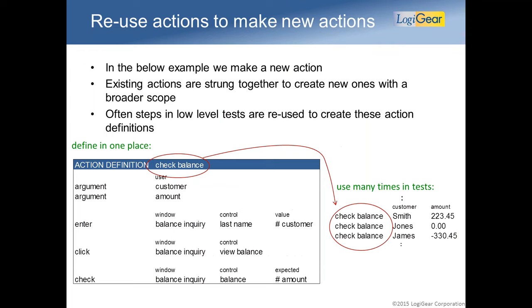Another popular technique is to take those actions and use them to create new actions. In this case we create a new action called 'check balance' — it has two arguments, customer and amount. We enter the last name of the customer, click a button for view balance, then check the balance against that argument. Once you have created an action, you can start using it in your spreadsheet over and over again.